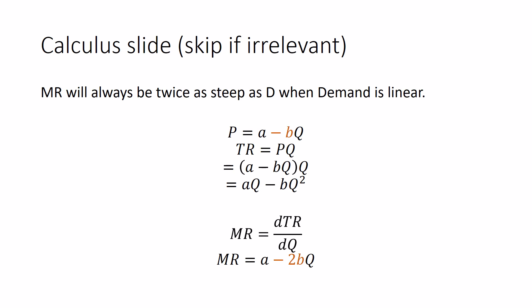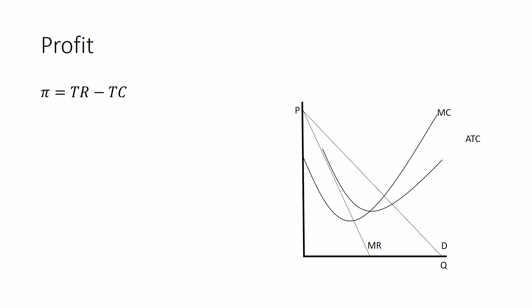You'll notice that the slope is double. Same intercept A, but instead of minus B, it's minus 2B. So there you go. And if you didn't need to know that, oh well, let's move on.